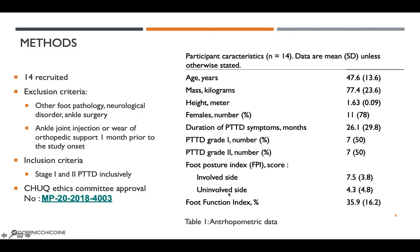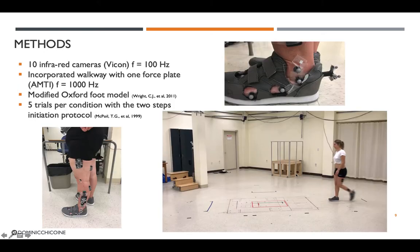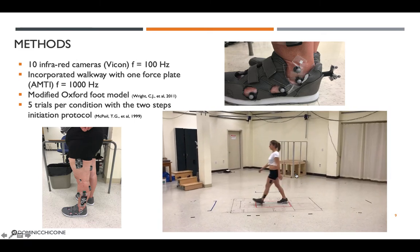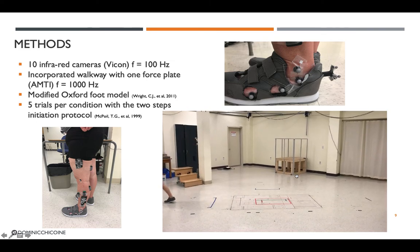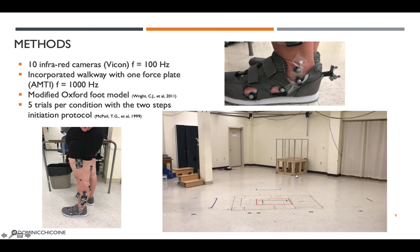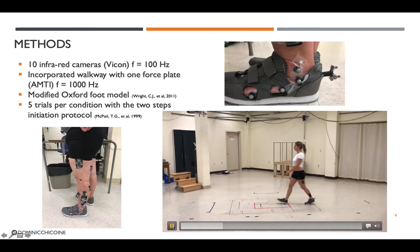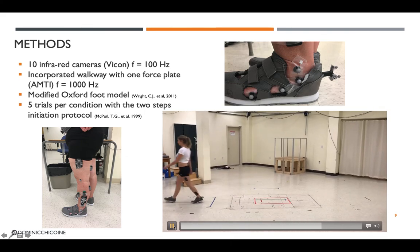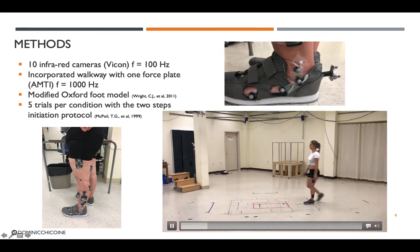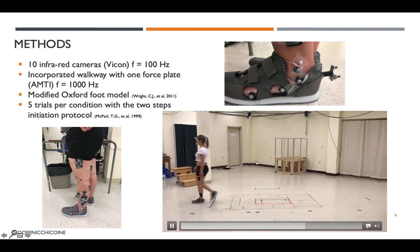You can also observe that the foot posture index is higher on the involved side compared to the uninvolved side. We used 10 infrared cameras incorporated in the walkway with one force plate. We used the modified Oxford Foot Model and conducted five trials per condition. We instructed participants to walk at their natural pace with a metronome, along the length of the walkway.